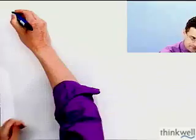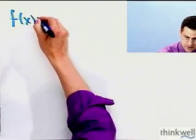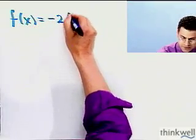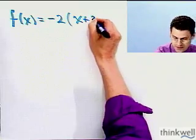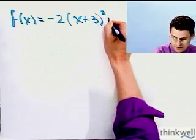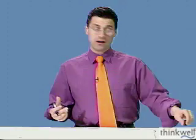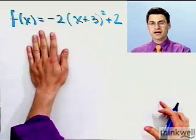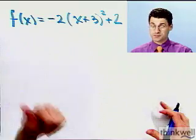So let's suppose we look at f(x) equals minus 2 times (x+3) squared plus 2. Now how would I graph this? Well actually this is in standard form so this is great. I can just read off the vertex pretty easily.